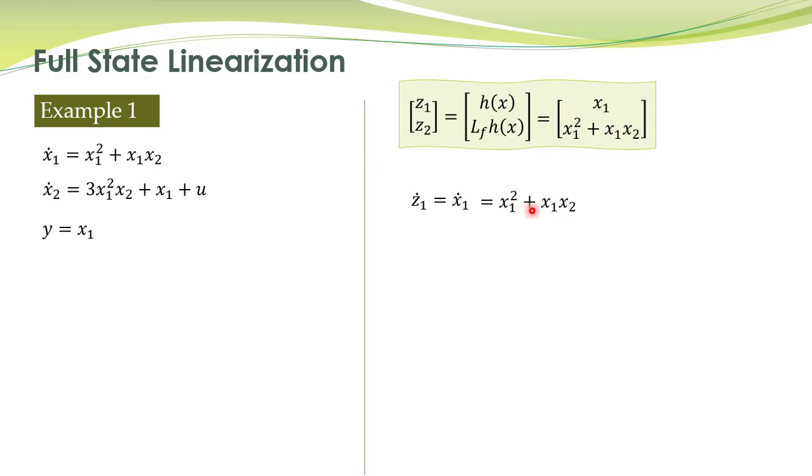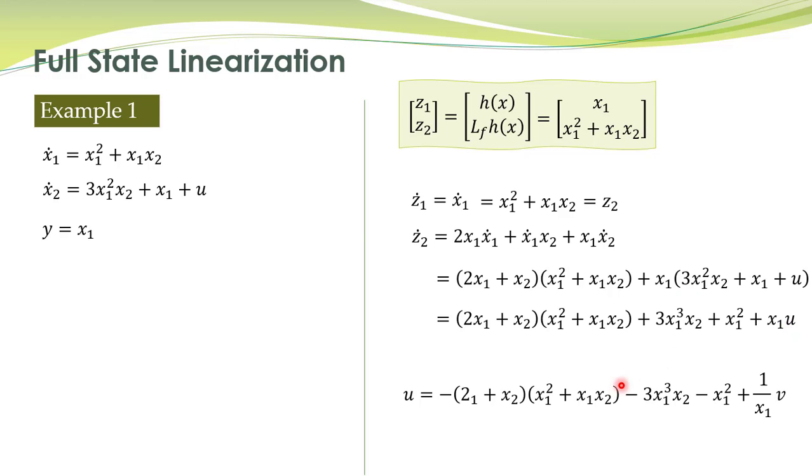We have this equation, and z2 dot is equal to this thing: derivative of this with respect to time. x1 dot and x2 dot can be substituted from here. We have this expression, and we can rearrange the terms.